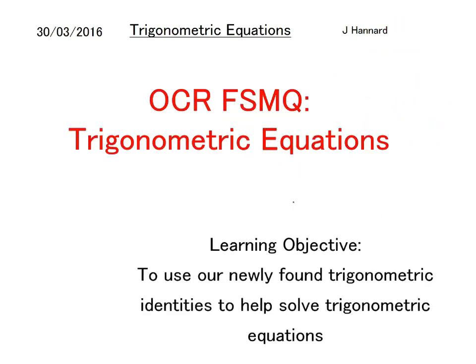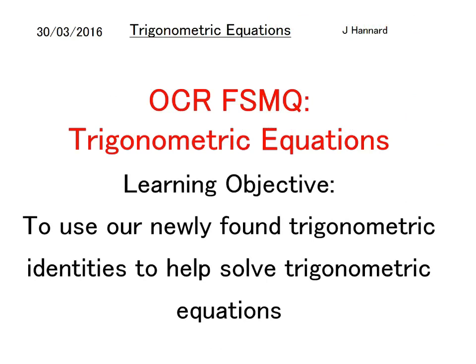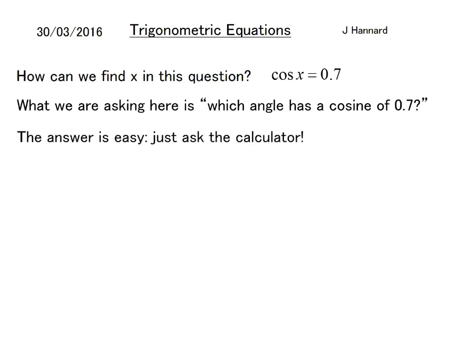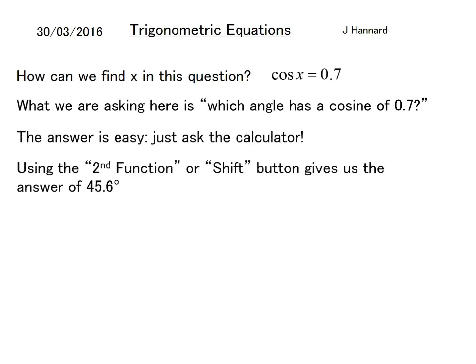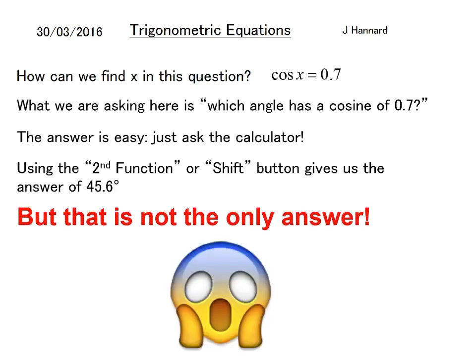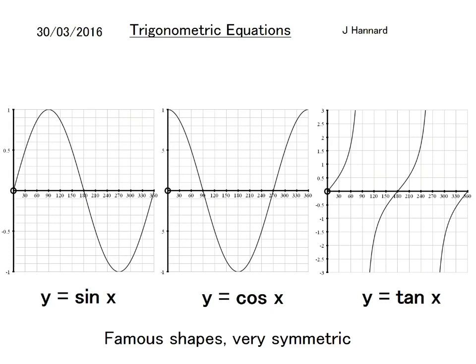Let's go on to trigonometric equations. We're going to use our newly found trigonometric identities to help us solve trigonometric equations. How can we find x in this equation: cos x equals 0.7? What we're really asking is which angle has a cosine of 0.7. The answer is easy, we'll just check the calculator. You press shift or the second function and shift cos and then type in 0.7 equals, and you'll get an answer of about 45.6. I'm going to do that right now and it is 45.57296, which rounds to 45.6.